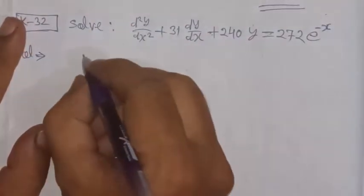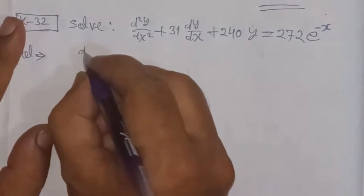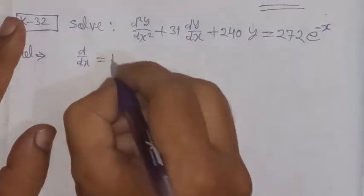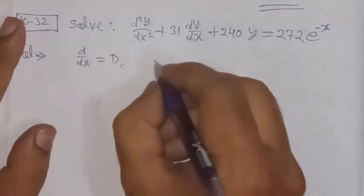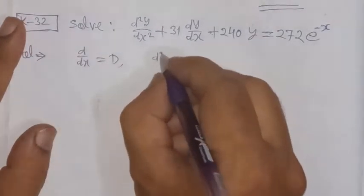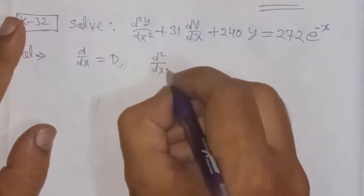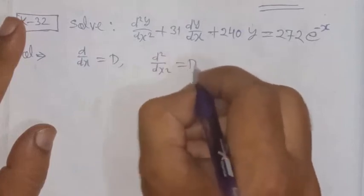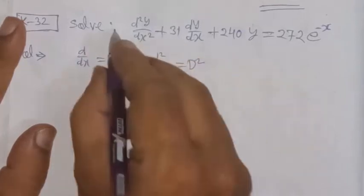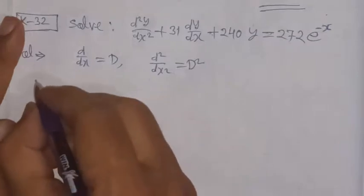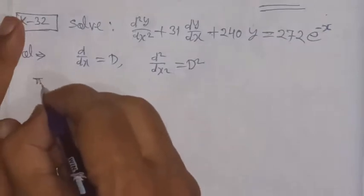We denote D/dx as capital D, so the second derivative d²/dx² becomes D². This way the given differential equation can be rewritten in D-operator form.